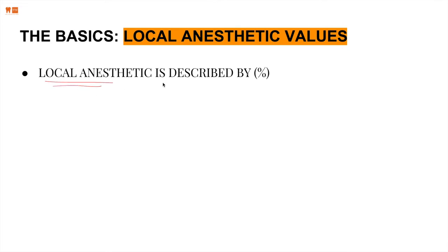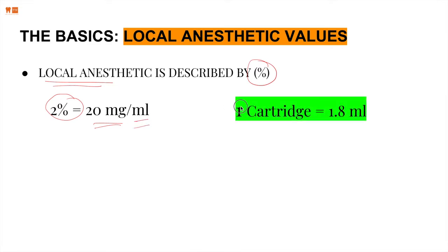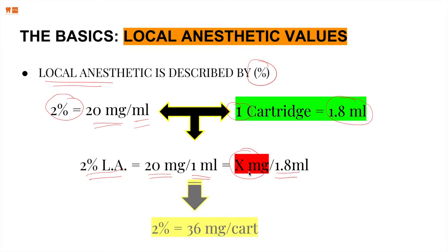Any local anesthesia is described by a percentage sign. We always hear 2% lidocaine or 3% mepivacaine. What is that percentage? 2% means 20 milligrams of that substance in one milliliter of liquid. We also know that one cartridge of local anesthesia consists of about 1.8 milliliters. So if 2% equals 20 milligrams per milliliter, then in 1.8 milliliters we get 36 milligrams of local anesthesia per cartridge.